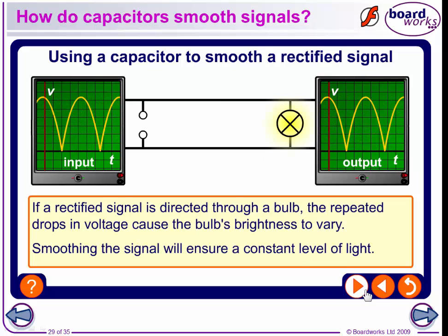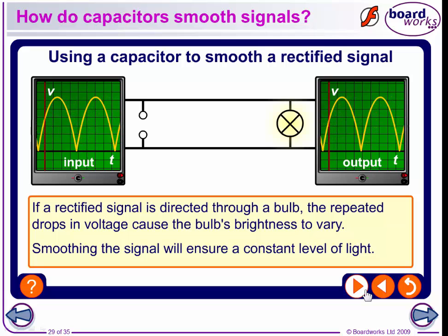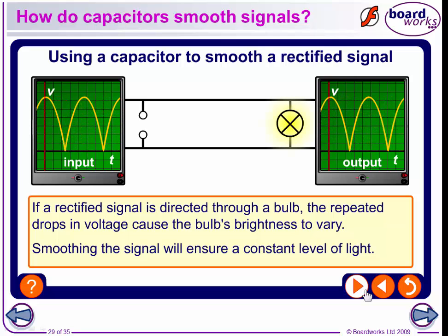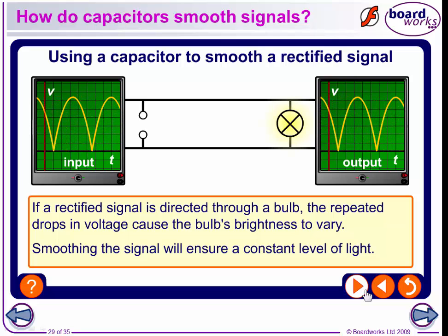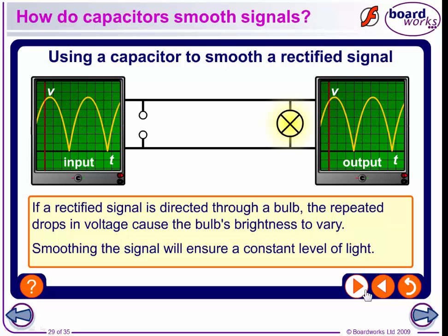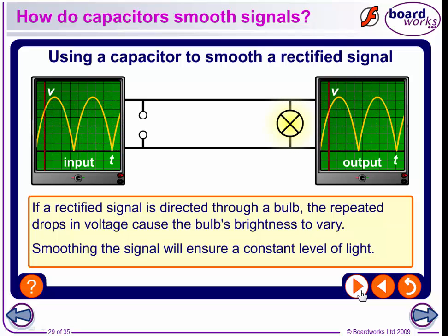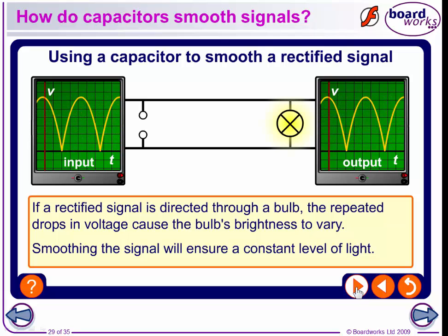A rectified signal is directed through a bulb. The repeated drops in voltage cause the bulb's brightness to vary. Smoothing will make sure it keeps a constant level of light.